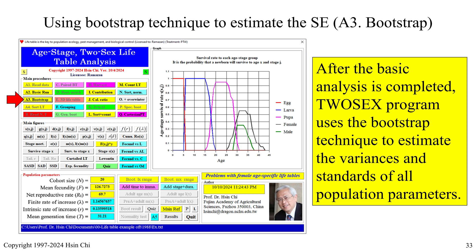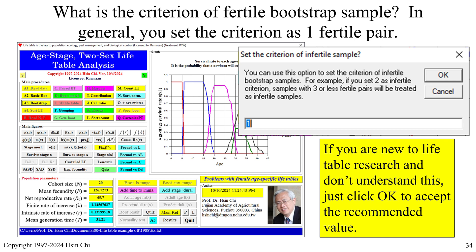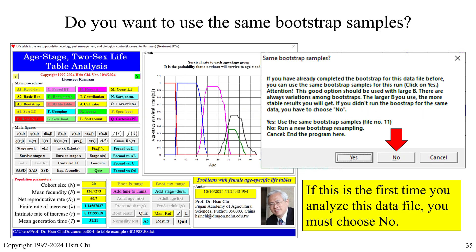After the basic analysis is completed, click on A3 Bootstrap to use the bootstrap technique to estimate the variances and standard errors of all population parameters. The program asks: what is the criterion of the fertile bootstrap sample? In general, set the criterion as one fertile pair. If you are new to life table science, just click OK. For the first run, you must choose No when asked about using the same bootstrap samples.